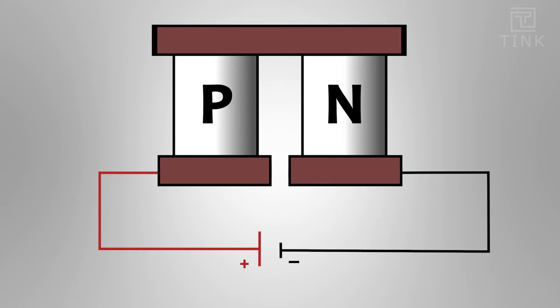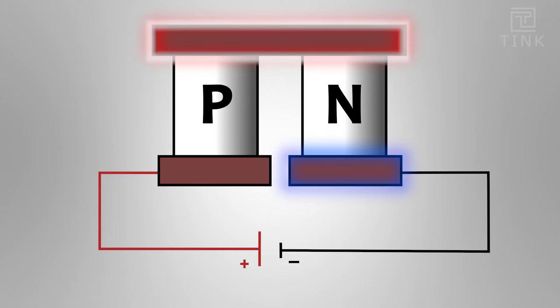Like I mentioned earlier the majority charge carriers in the N type semiconductor are electrons. So electrons will get pushed above and they will pick up the heat from this junction making it cold and deposit the heat to the other side making it hot.